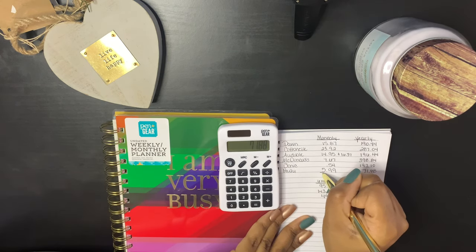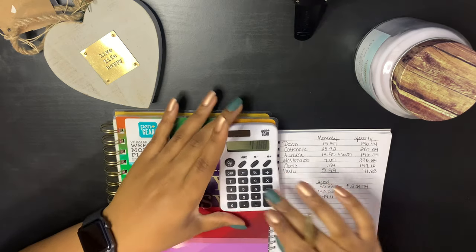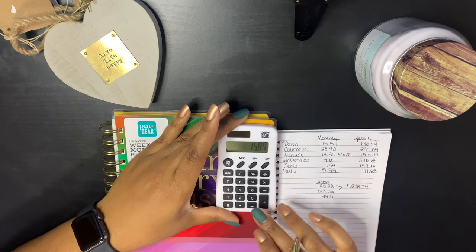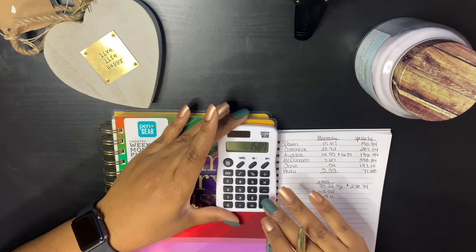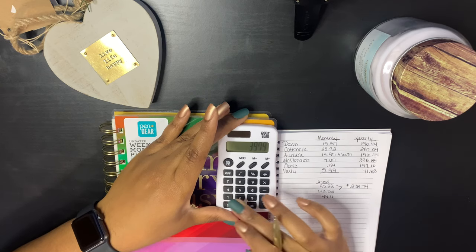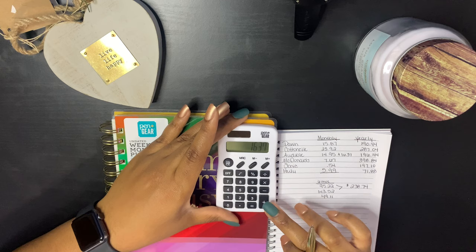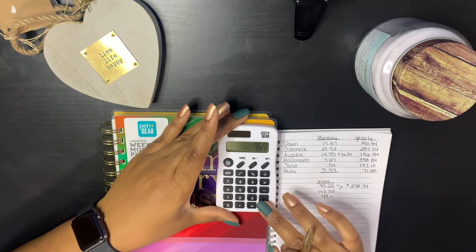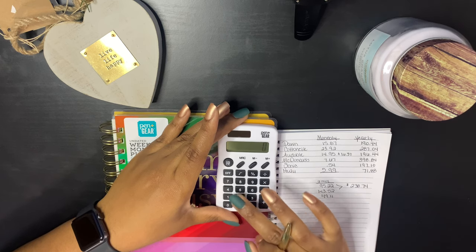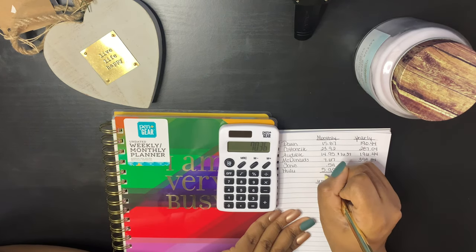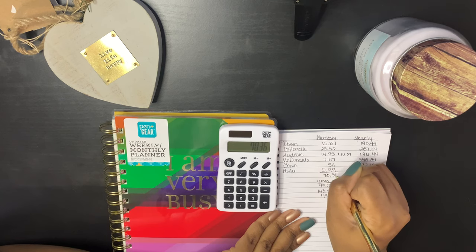Okay, let's add this up right here. The monthly, so a month, this is my automatic withdrawals of my subscriptions. $15.87 plus $23.92 plus $16.37 plus $7.67 plus 54 cents plus $5.99 equals, so that comes out to $70.36.